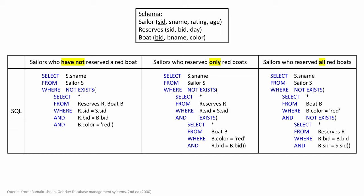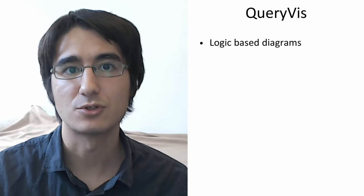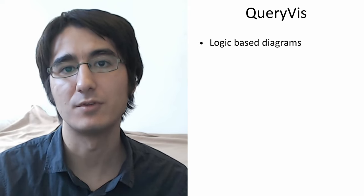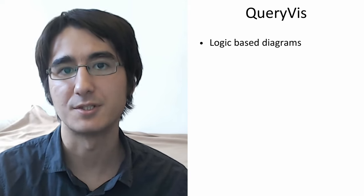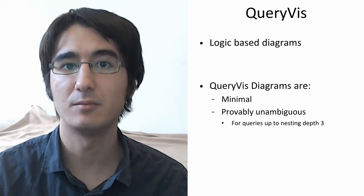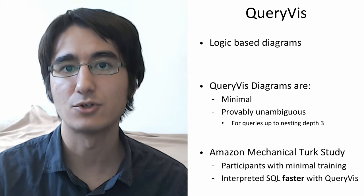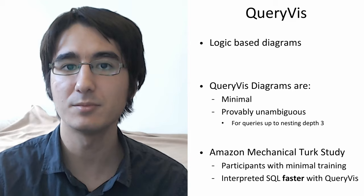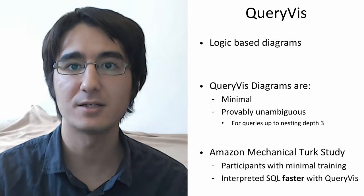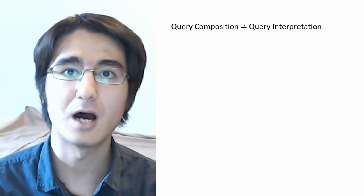What if there was a way to visualize the underlying logic of an SQL query through a simple diagram for easier interpretation? This is exactly what we propose. In order to aid users in interpreting existing SQL queries more efficiently, we construct a logic-based diagram that more readily exposes the underlying logic of the SQL query. We call our diagrams QueryVis diagrams. The design of our diagrams is not ad hoc but grounded in visualization best practices. Our diagrams are minimal and provably unambiguous for arbitrary queries up to nesting depth 3. Our study on Amazon Mechanical Turk has shown that participants with minimal training were able to correctly interpret SQL queries faster using our diagrams rather than through SQL text alone.